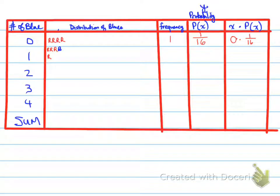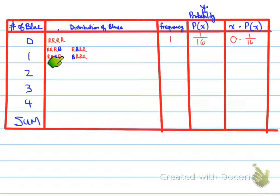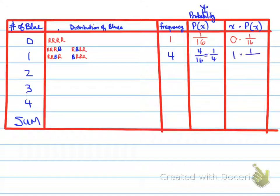For 1 blue, it can be in any one of four positions — red/red/red/blue and its permutations — so there are 4 out of 16 possibilities, giving P(x) = 4/16 = 1/4. Then x times P(x) = 1 × 1/4.